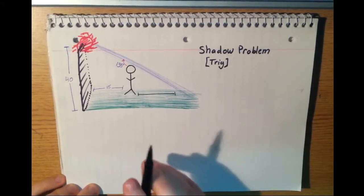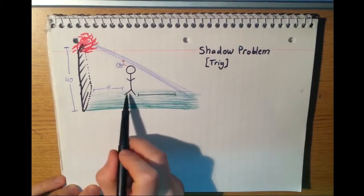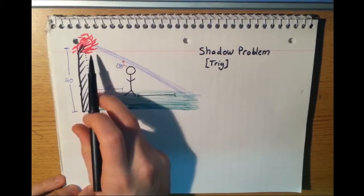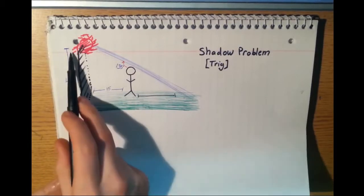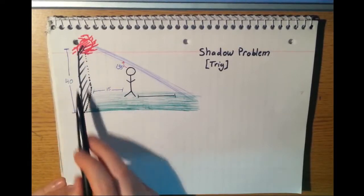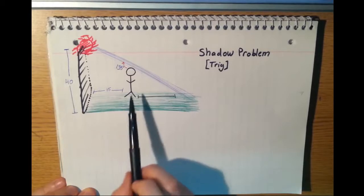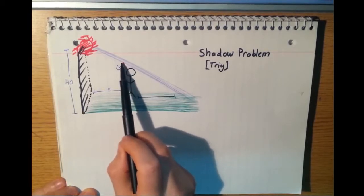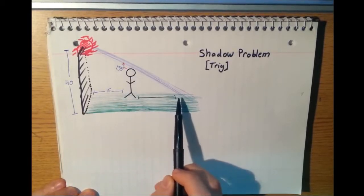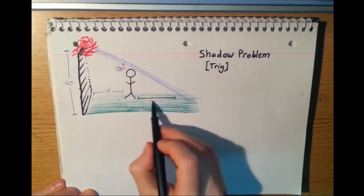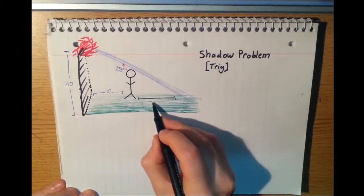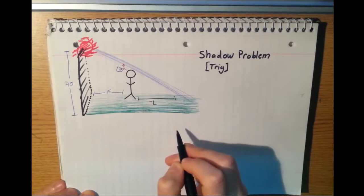We're given three things: the distance that he is from the wall with the light on it, the height of the wall or how far the light is from the ground, and the angle that the light beam makes with his head. We've got to figure out this length right here. I'm going to call this length L for his shadow.